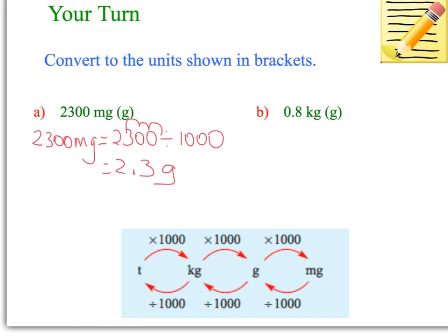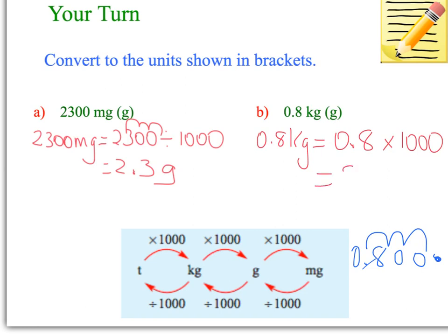I hope you paused the video to do this next one. So 0.8 kilograms to grams. When we're converting kilograms to grams, we're going from a larger unit to a smaller unit, so we multiply by 1,000. So 0.8 kilograms equals 0.8 times by 1,000. We multiply right, moving the decimal place right three places. 1, 2, 3. So that means it's 800 grams. 0.8 of the kilogram is 800 grams.